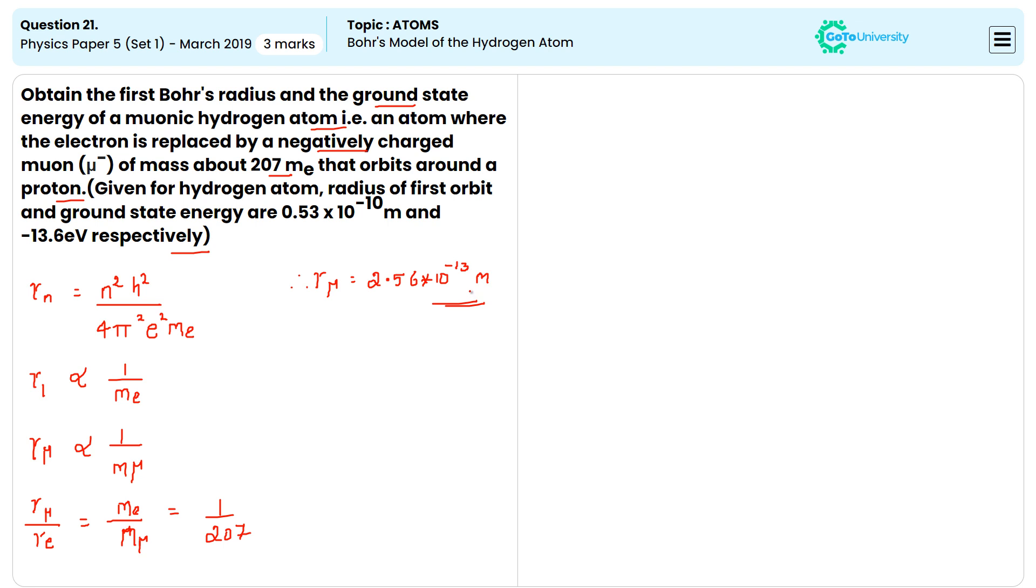Then, energy of electron in nth orbit. This is the radius of the nth orbit previously found. Now, energy of electron in nth orbit, that is En.